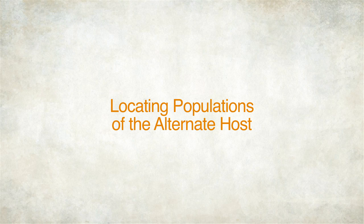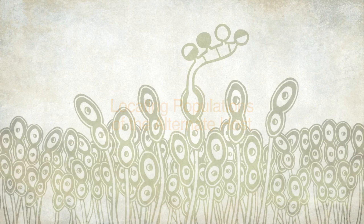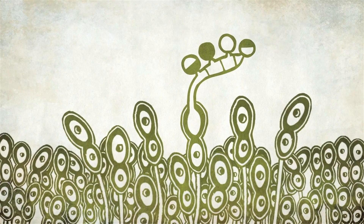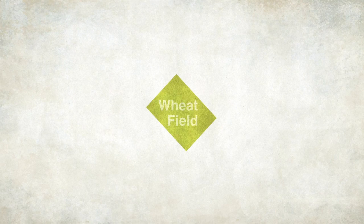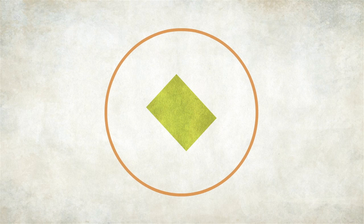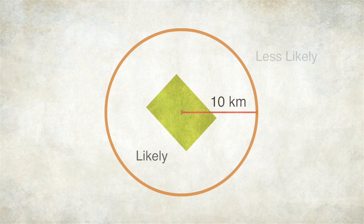Where should we look for alternate hosts? Recall from the pathogen life cycle that the only spore that can infect the barberry host group is the basidiospore. Relatively small and thin-walled, basidiospores are prone to rapid desiccation in many environments and are therefore believed to remain viable only over short dispersal distances. Thus one is unlikely to find cereal rust infection on barberry plants growing 10 or more kilometers from cereal hosts. This is a general requirement of proximity that can help prioritize surveillance efforts.